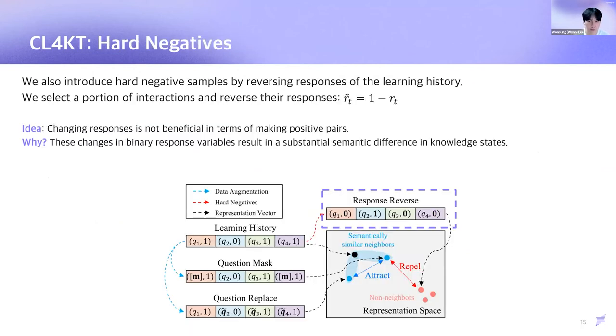Aside from the data augmentation method for positive pairs, we also introduce hard negative samples by changing their responses in the learning history. To generate hard negatives, we select a portion of interactions and reverse their responses. The idea behind that is changing responses is not beneficial in terms of making positive pairs. We guess the reason why is that these changes in binary response variables result in a substantial semantic difference in terms of knowledge states.